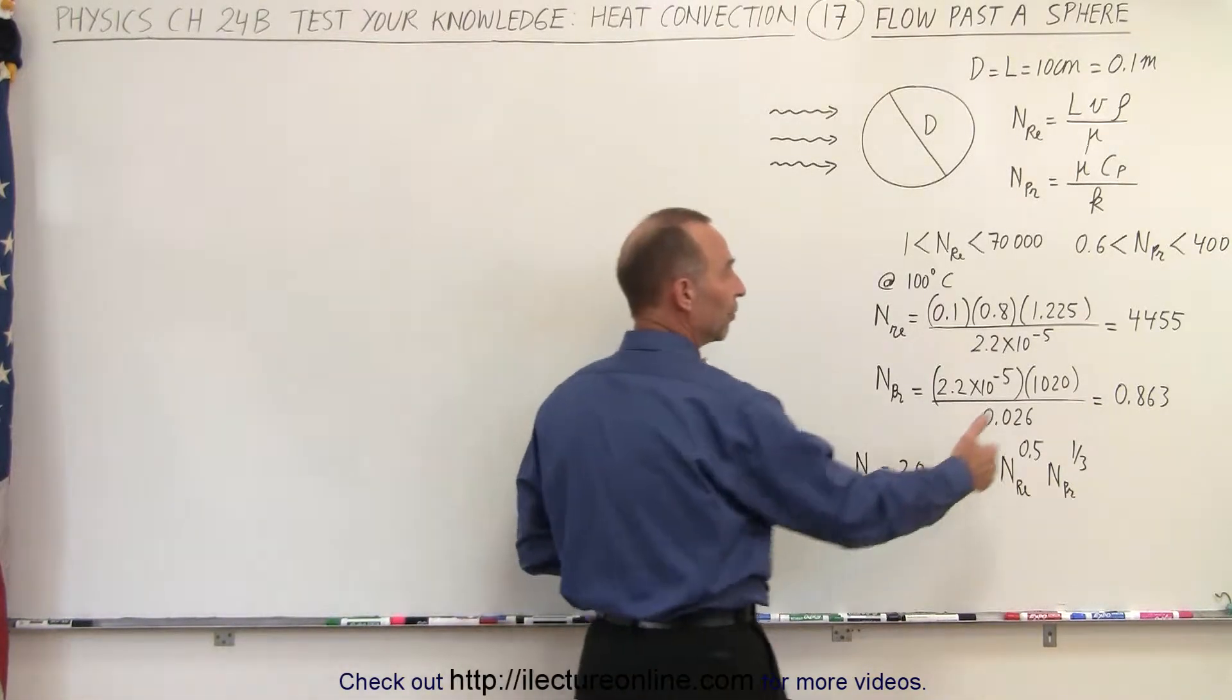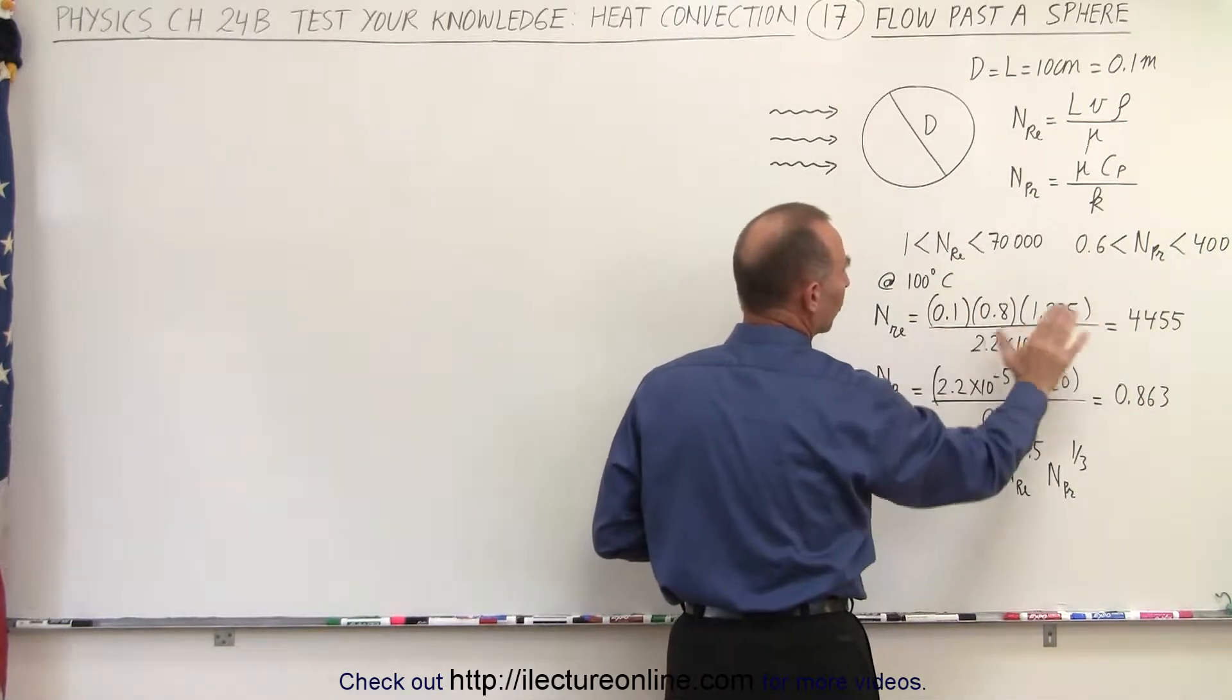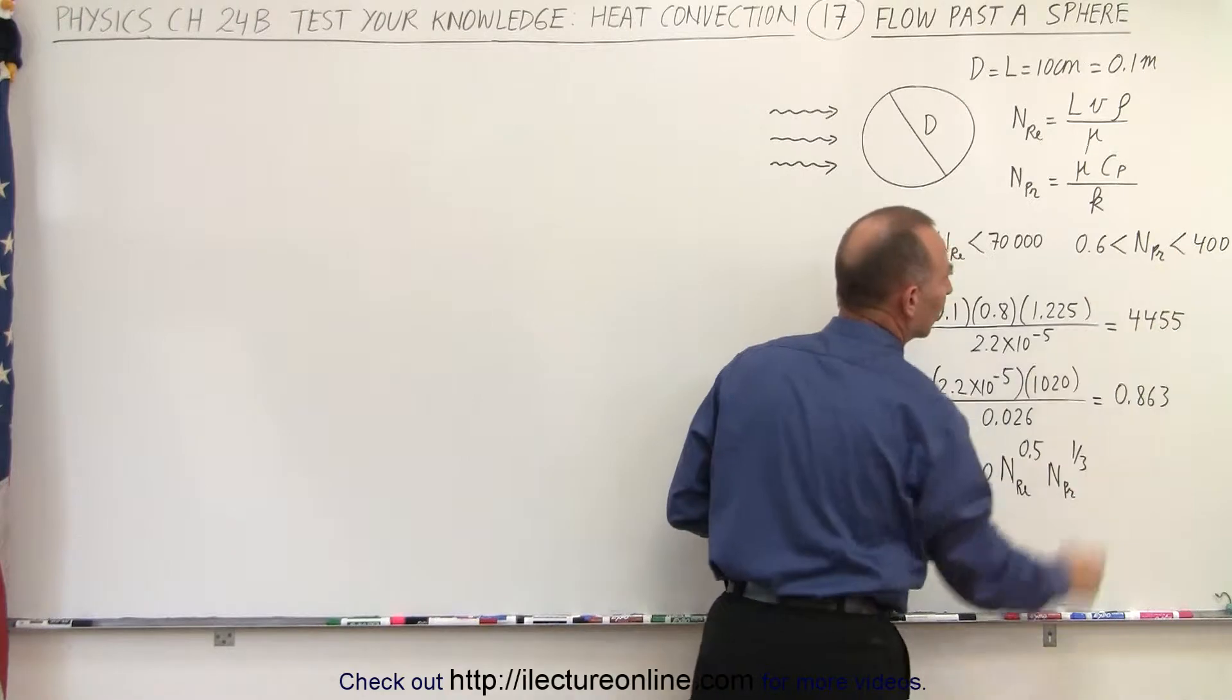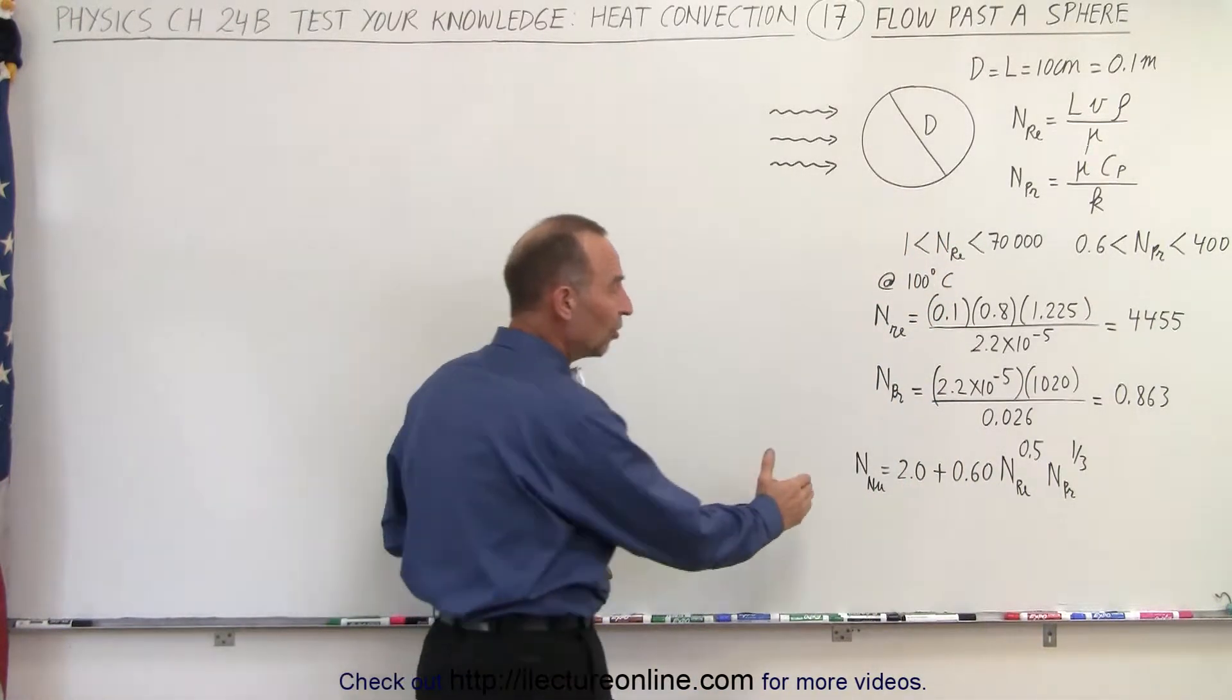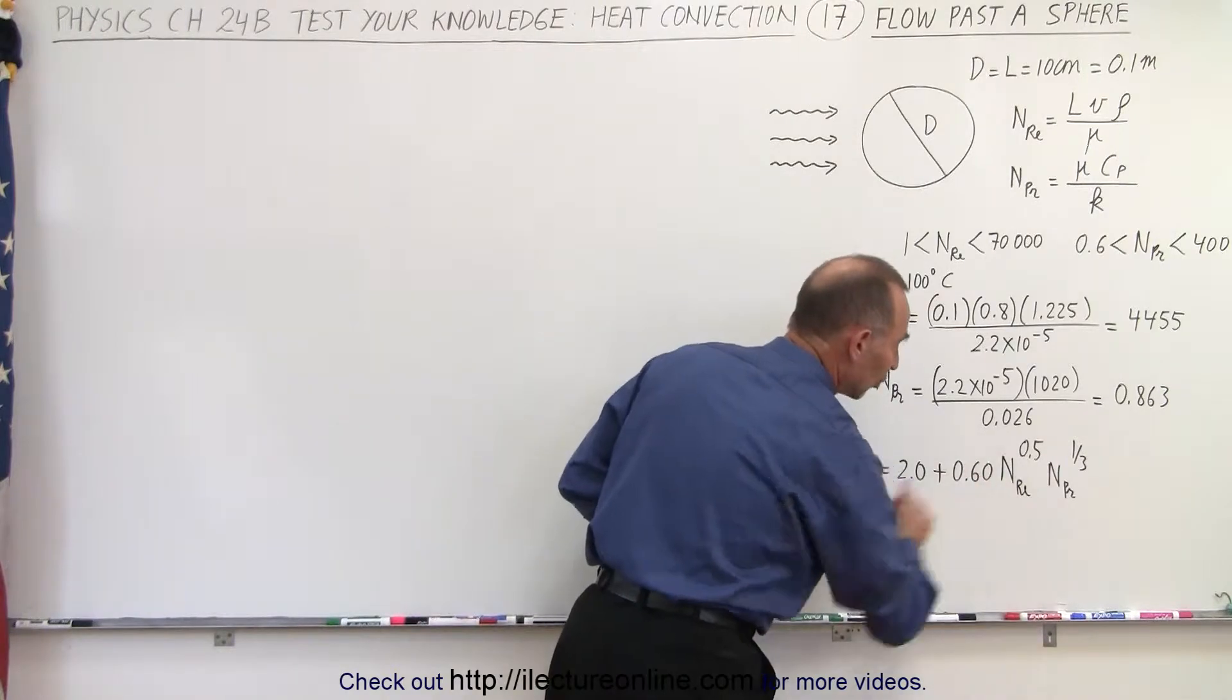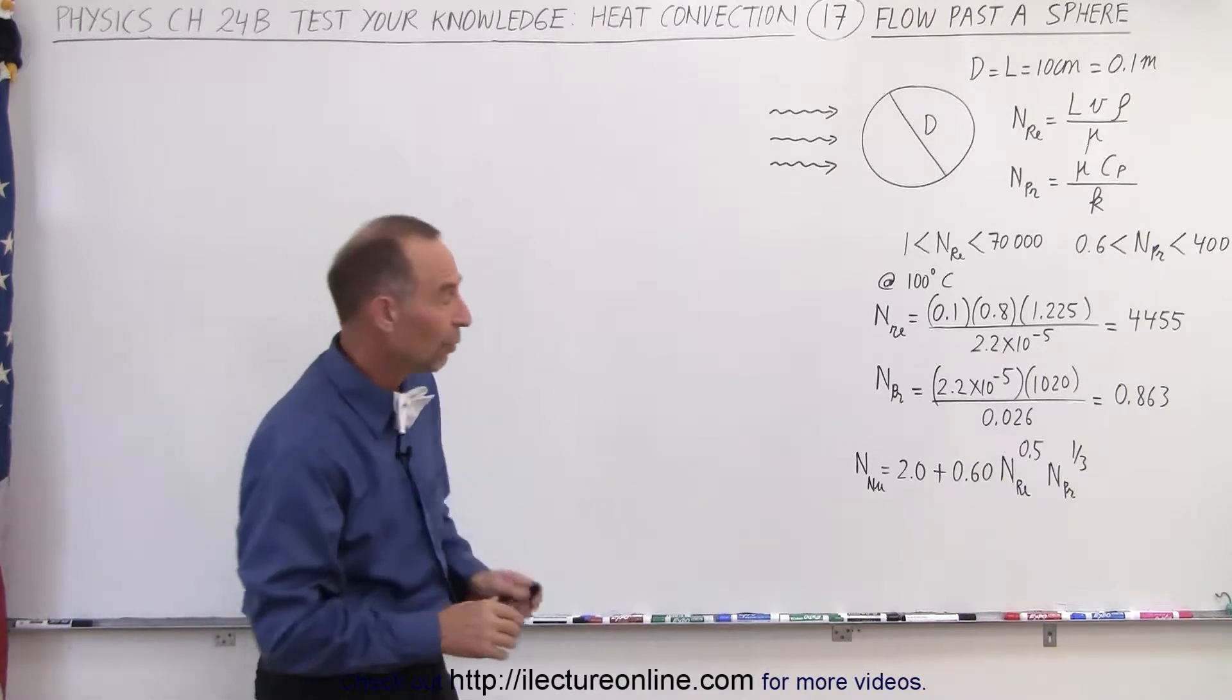So that gives us two values, one for the Reynolds number, one for the Prandtl number. For a sphere we want the Reynolds number to fall within this range. We want the Prandtl number to fall within that range, and if it does we can use this particular equation for the Nusselt number, but notice that it's different from what we've seen before.